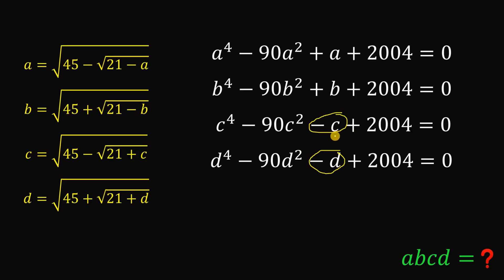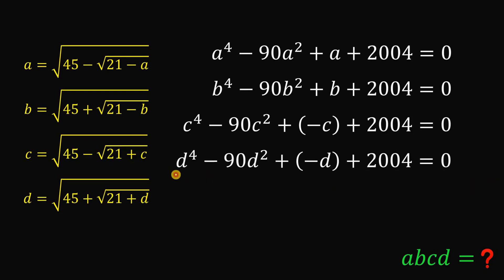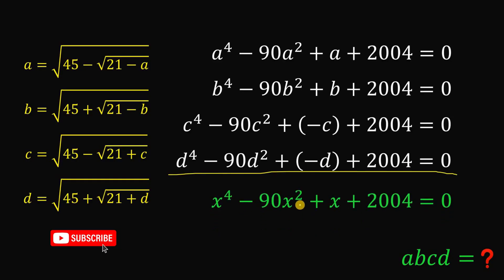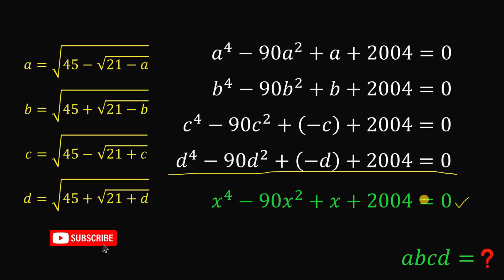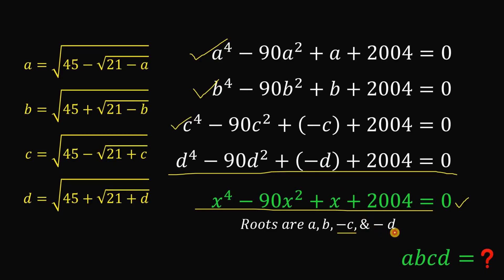We can rewrite negative c as plus negative c, and negative d as plus negative d. From here, we see that all four results satisfy the single quartic equation: x to the fourth power minus 90x-squared plus x plus 2004 equals zero. The roots of this quartic are a, b, negative c, and negative d — replace x with a to get equation one, with b to get equation two, with negative c for equation three, and with negative d for equation four.